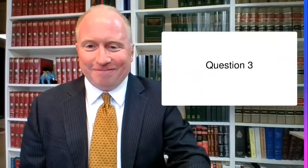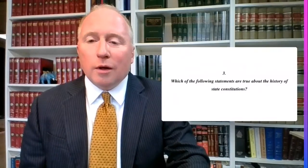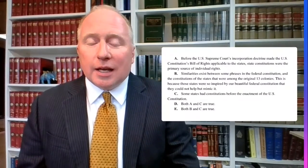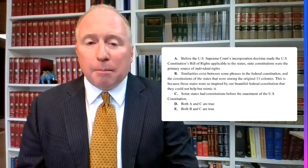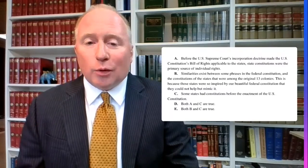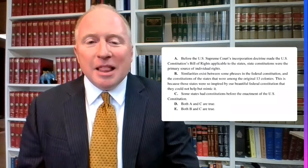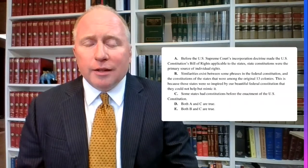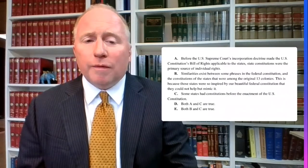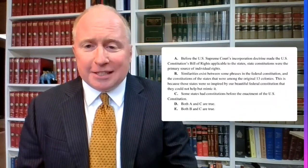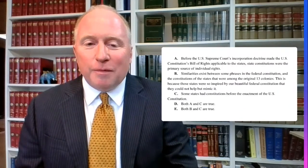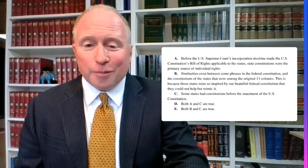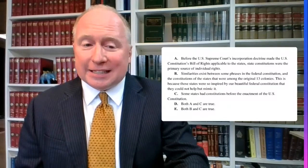Let's go now to question three. Which of the following statements are true about the history of state constitutions? A: Before the U.S. Supreme Court's incorporation doctrine made the U.S. Constitution's Bill of Rights applicable to the states, state constitutions were the primary source of individual rights. Choice B: Similarities exist between some phrases in the federal constitution and the constitutions of the states that were among the original 13 colonies — because those states were so inspired by our federal constitution that they could not help but mimic it. Choice C: Some states had constitutions before the enactment of the U.S. Constitution. Choice D: Both A and C are true. Choice E: Both B and C are true.